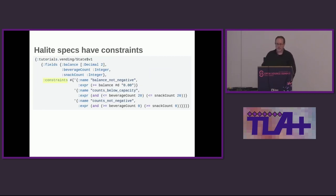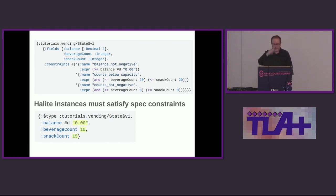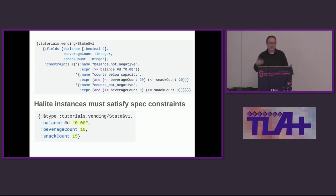Specs also have constraints. You can have arbitrary expressions over the fields in the spec, pretty much like you'd expect from TLA+. If you make a Halite instance, not only does it have to structurally match the spec, but it has to satisfy all the predicates from all the constraints. You can't make an instance without it satisfying the constraints — if you tried to make one that didn't, you would get a runtime error as soon as you tried to create it. All the code I'm going to show is from the Halite documentation and it's made to run in the Clojure REPL.